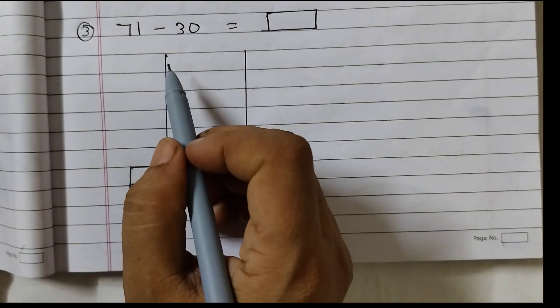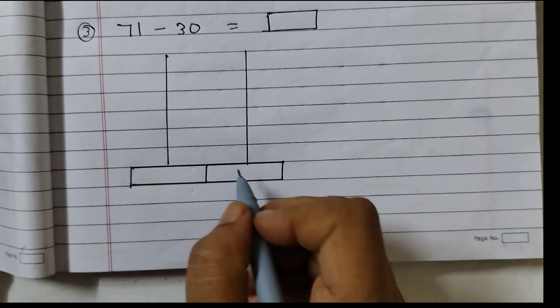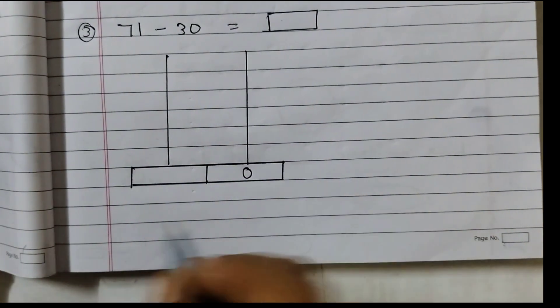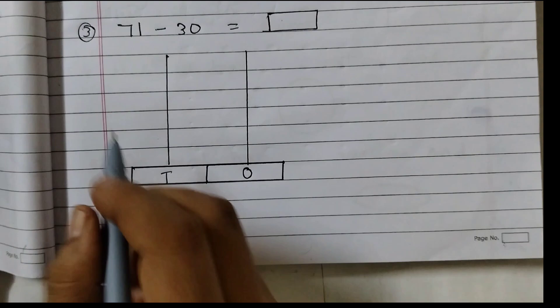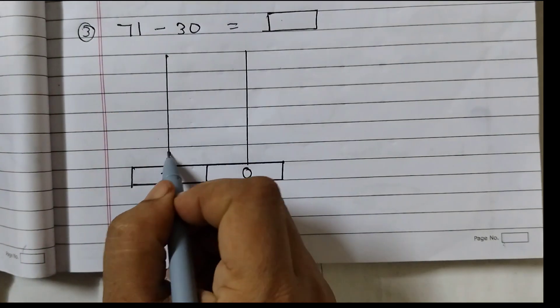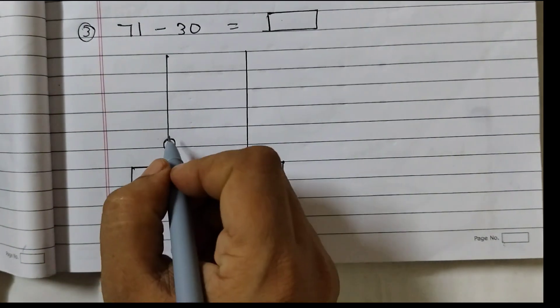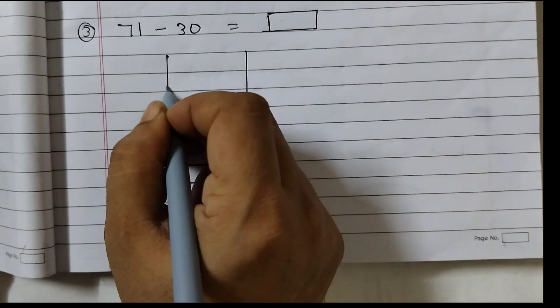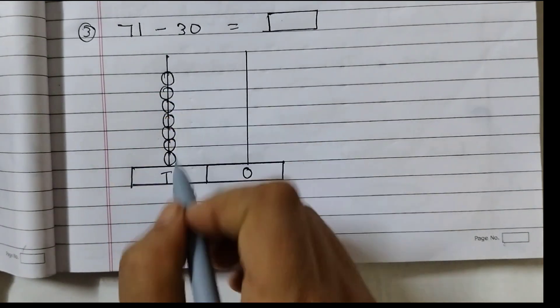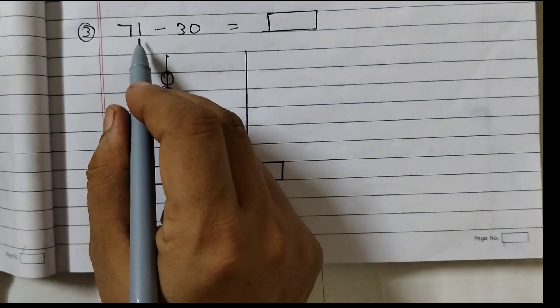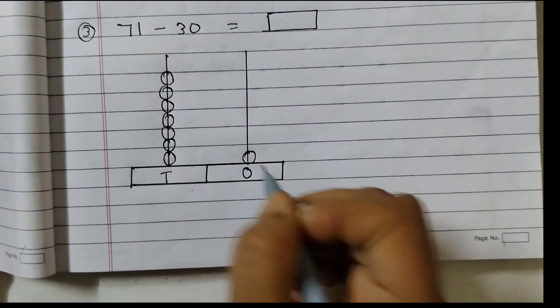This is the last one. You may pause the video and you can try yourself. So this is 1's rod. This is 10's rod. 71. 7 tens. 2, 3, 4, 5, 6, 7. First draw 7 beads. And here 1 one. So 1 here.